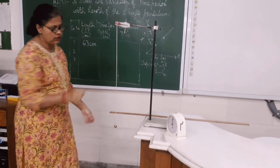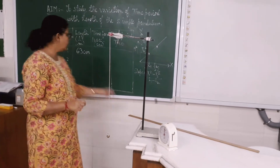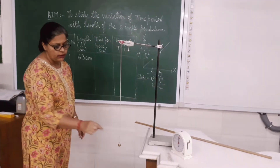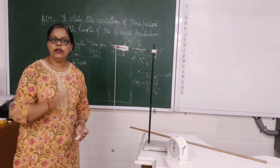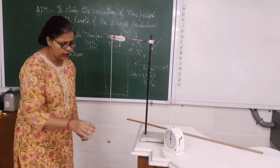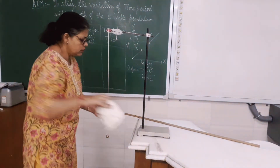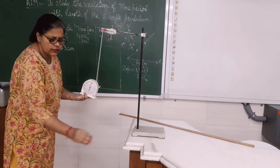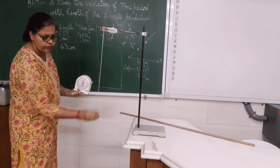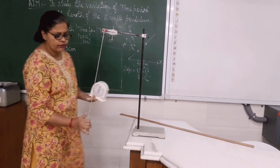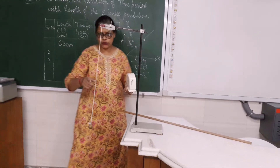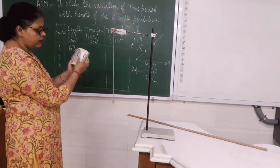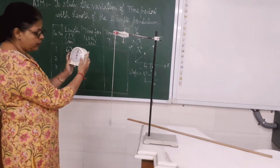Now, once I have measured the length, I will find out the time taken by this pendulum to oscillate in 10 oscillations. Now I will use the stop clock here. I will give this pendulum a push. Now when I give this pendulum a push, it will show a to and fro motion. I have to measure the time for 10 oscillations.